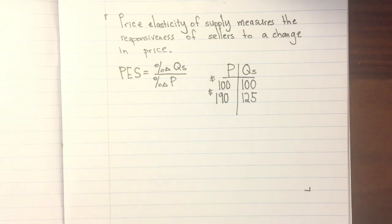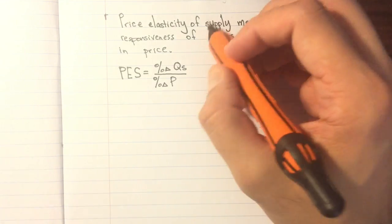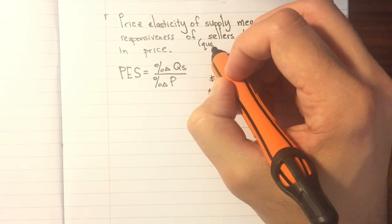Price elasticity of supply measures the responsiveness of quantity supplied to a change in price. The formula is the percent change in quantity supplied divided by the percent change in price.